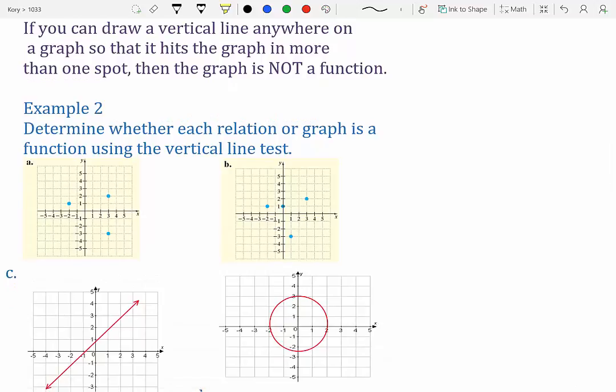So for a, the vertical line test, what matters right here, these two values, you see how they both share the same three? It's not a function.